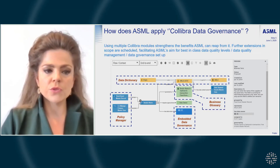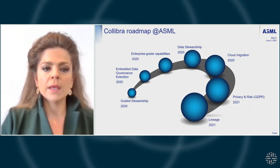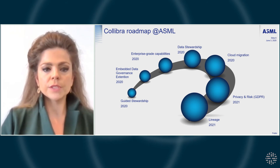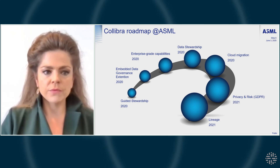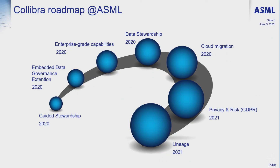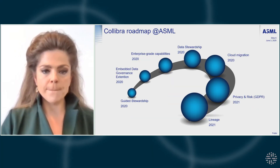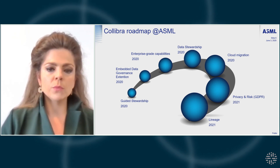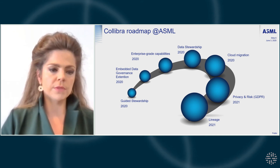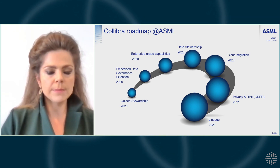This is how we currently implemented Colibra data governance within ASML, but let's have a look at the future. For this year and the coming years, we want to focus on embedding the data governance extension — the common ground for the single source of truth for metadata management — and extend it, especially in areas of the business where maturity is not yet high. For business domains where maturity has grown, we want to introduce more enterprise gate capabilities and data stewardship. For the long run, we will focus on more lineage and GDPR-related topics. This is our Colibra roadmap with ASML.